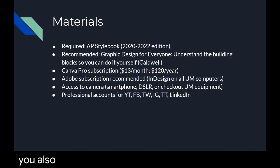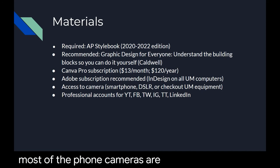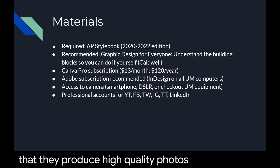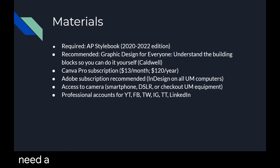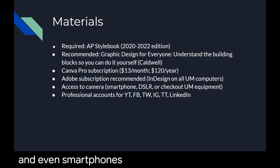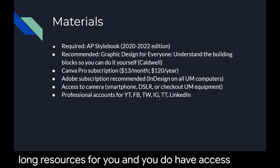You also need access to a camera. You can use your smartphone camera — that's totally fine. Most phone cameras are good enough now to produce high quality photos. If not, you will need a DSLR. You can check out DSLR still cameras and even smartphones through the UM equipment checkout, and that resource is placed in the semester long resources for you.